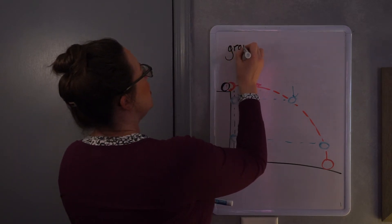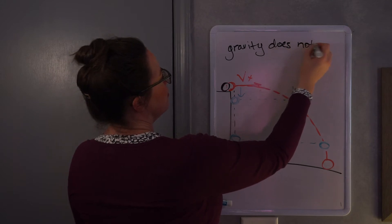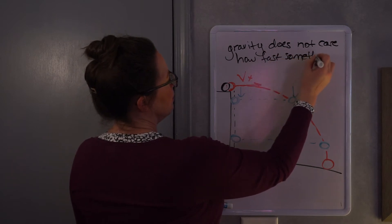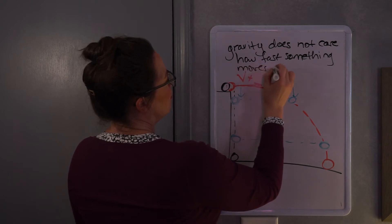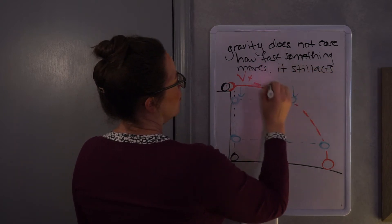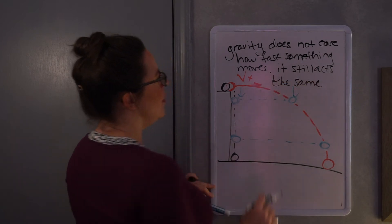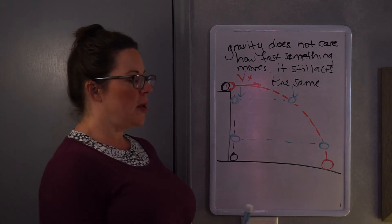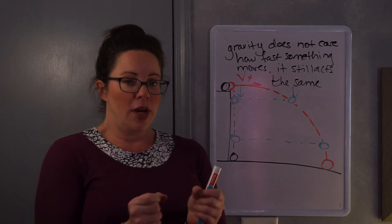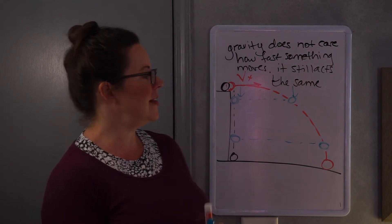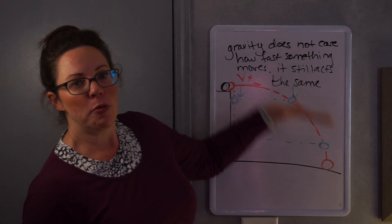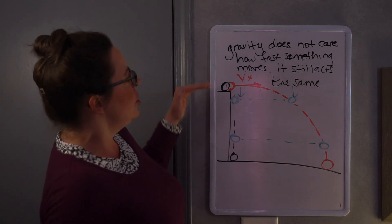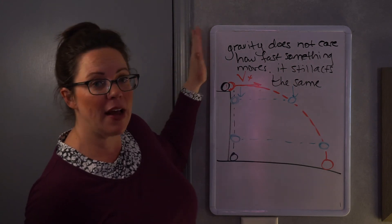So the thing you need to understand about projectiles is that gravity does not care how fast something is moving. It's going to act the same on any object regardless of how fast it's moving, whether it's a shot bullet, whether it's something you're dropping, whether it's two marbles. You can try this at home off the edge of the table. You can try to flick a marble and let one roll off. It's kind of hard to do but you can try to do that at the same time and see if you can do a slow-mo video or something and get that to work out so you can see them both landing at the same time.